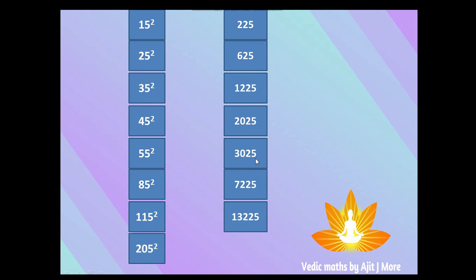125 squared — before 5 is 12, after 12 is 13, 12×13=156, join with 25 → 15625. 205 squared — before 5 is 20, after 20 is 21, 20×21=420, join with 25 → 42025.